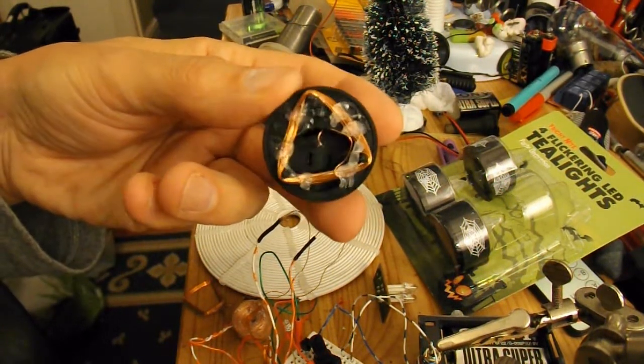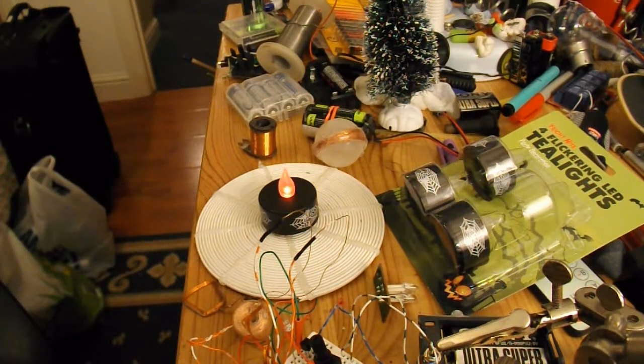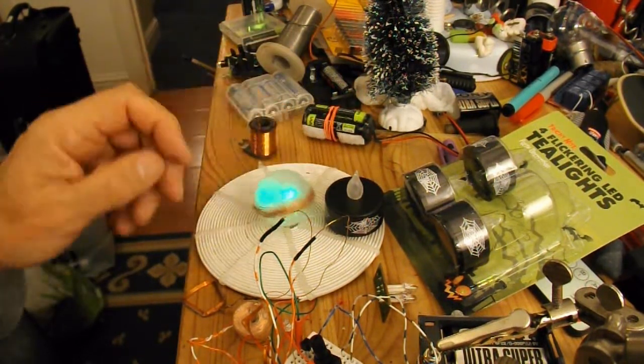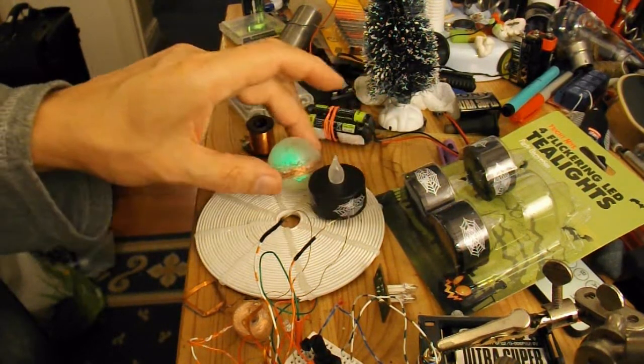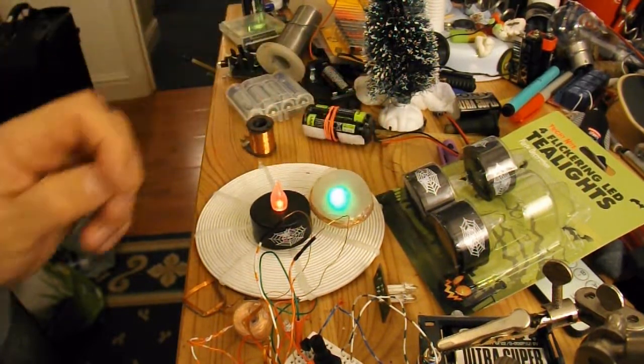A little triangular coil underneath. So red tea light, green eye, looks like it's going to be Halloween items.